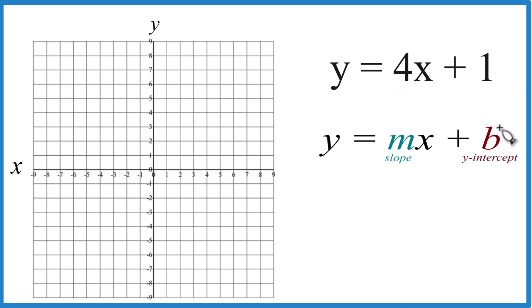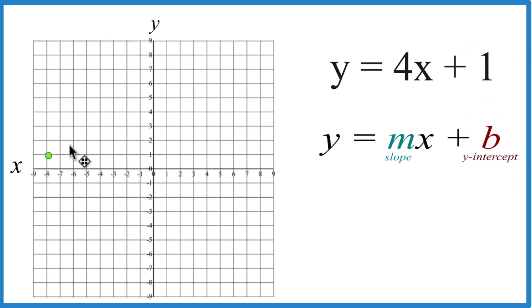So we have b here, the y-intercept. That's 1. So we just go on the y-axis and we find 1 right here. That's our y-intercept.